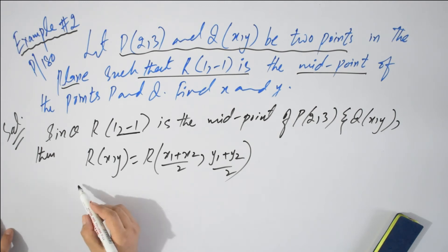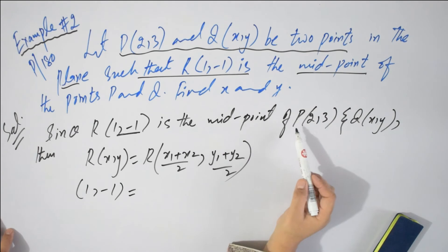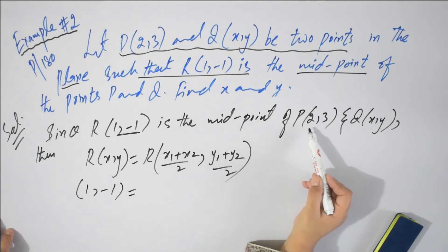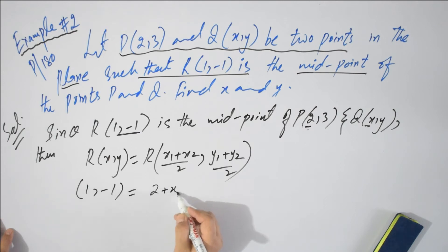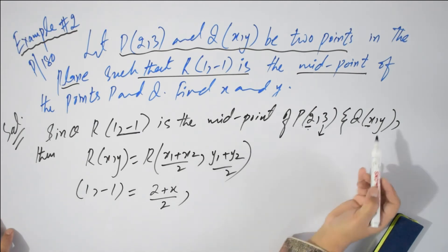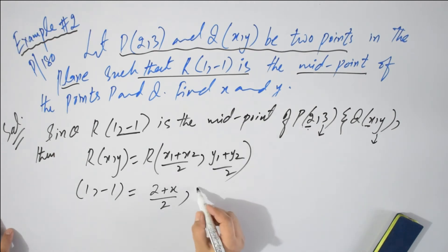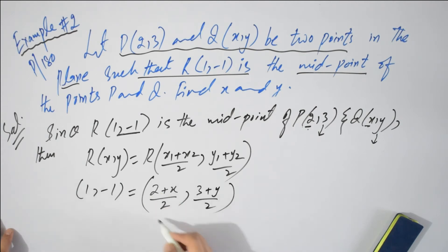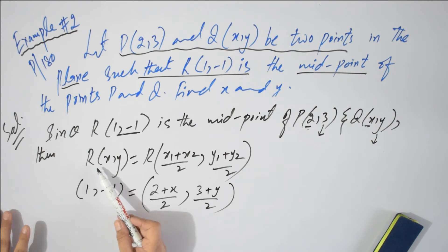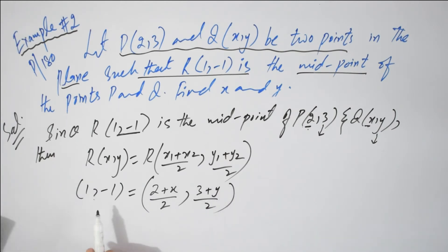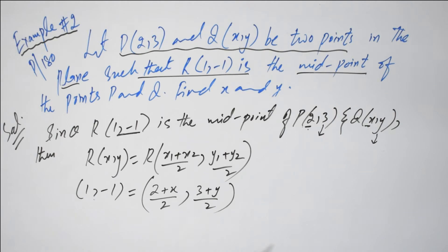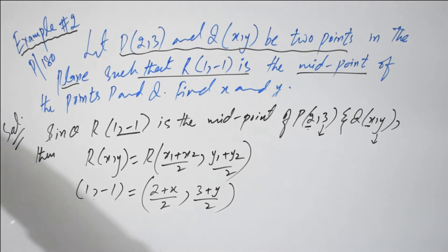Now putting values — this is the midpoint, so the value of midpoint I am writing is 1 comma minus 1, and midpoint of these two points means I add their x-coordinates: x1 is 2 and x2 is x, so it becomes (2 plus x) by 2. And their y-coordinates — y1 is 3 and y2 is y — so it becomes (3 plus y) upon 2. I put the midpoint value and the coordinates of the two endpoints. Now I have two equal ordered pairs — you know from Chapter 8 that when two ordered pairs are equal, their first elements are equal.